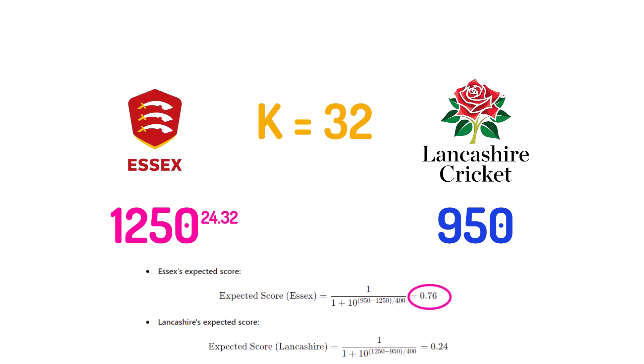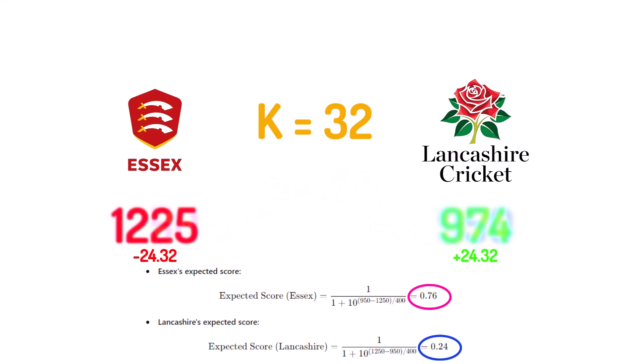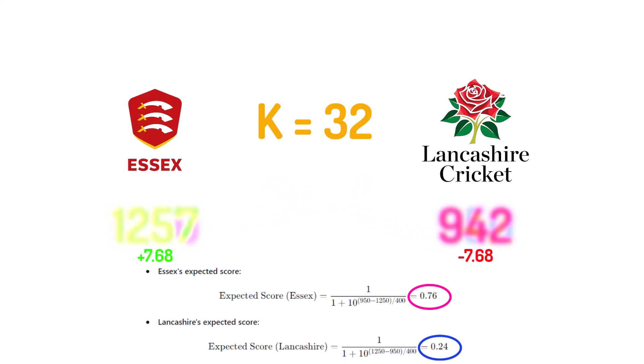The higher rated teams risk more points while the lower rated teams risk fewer points. If the lower rated team wins, they gain more points because generally they're the underdog. If the higher rated team wins, they gain fewer points. A win is scored as 1 or 100% of the points, a draw is 0.5, and a loss is scored as 0. These points are added to or subtracted from the team's original ELO rating.